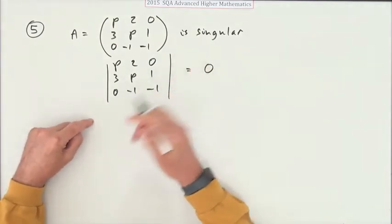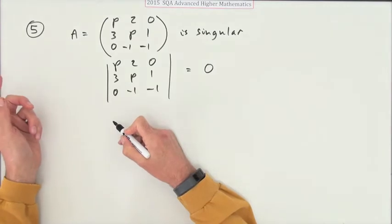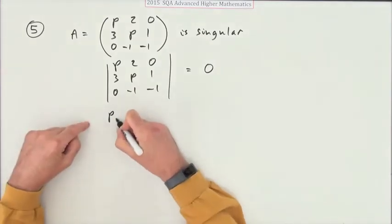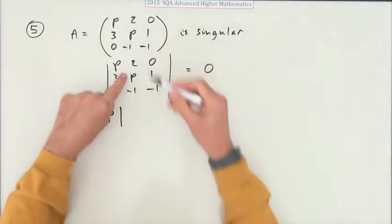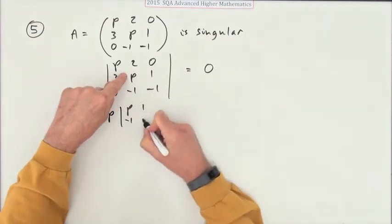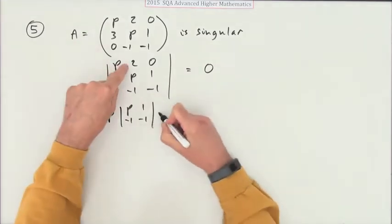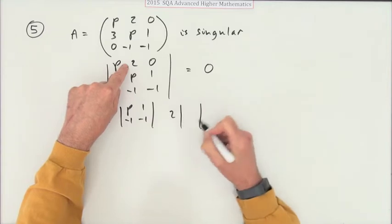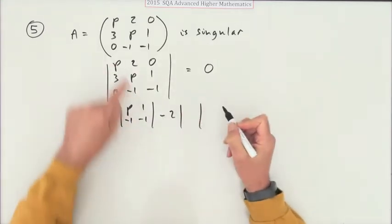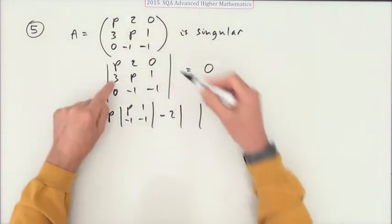which is p, 1, negative 1, negative 1. Then 2 multiplying its minor, but the signed minor makes that a negative in that position. Canceling out that part gives you 3, 1, 0, negative 1, and then 0 equals 0.